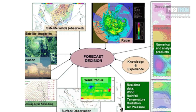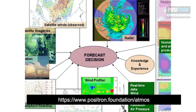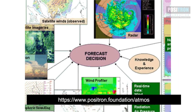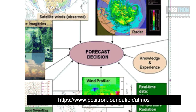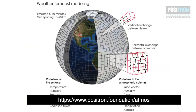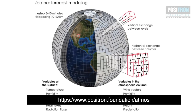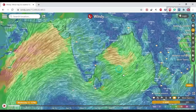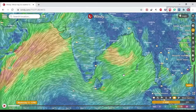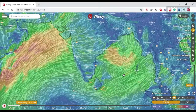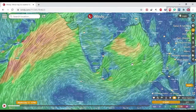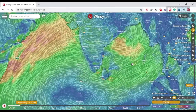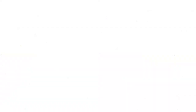This atmospheric model can give an output of the extended state of the current weather over a particular region. What you see here is the wind speed and wind direction of the current scenario.